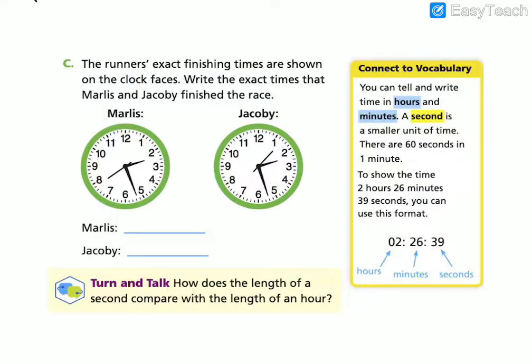We're going to look at the second part of this problem now. So here the runner's exact finish times are shown on the clock faces. Write the exact times that Marlise and Jacoby finished the race. So if we take a look here, we're going to see our hour hand is still between two and three. But now let's take a look at our minute hand. Now the minute hand isn't pointing directly at a minute. It's on its way to that 27 mark, which means it's still 26 minutes.